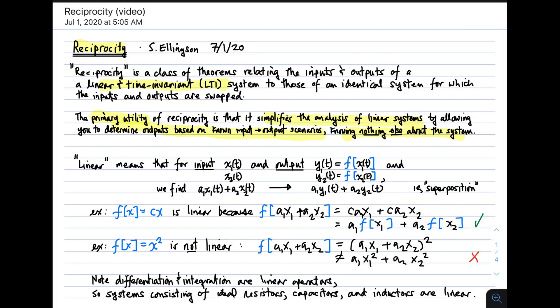And so let me repeat it. The primary utility of reciprocity is that it simplifies the analysis of linear systems by allowing you to determine outputs based on known input-output scenarios, and knowing nothing else about the system. That's the key idea.